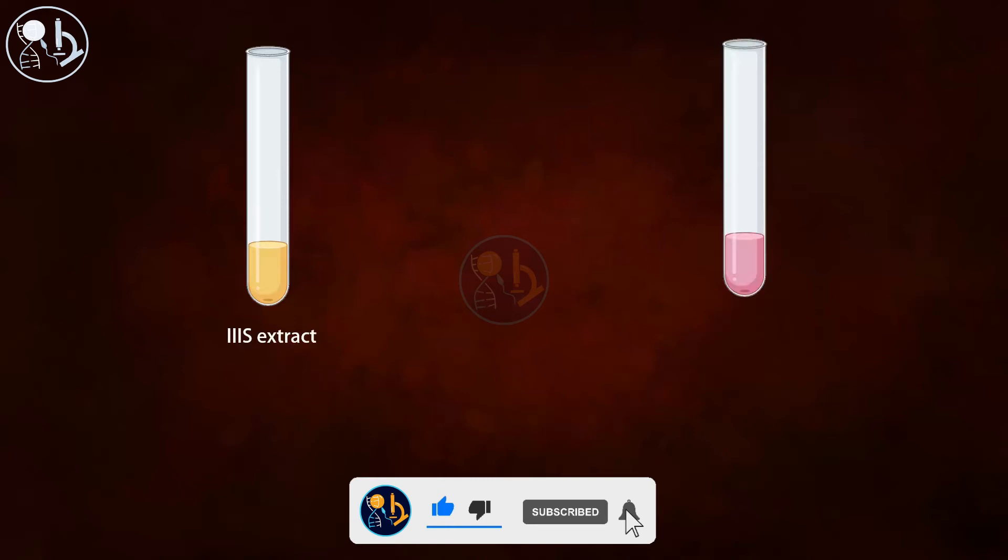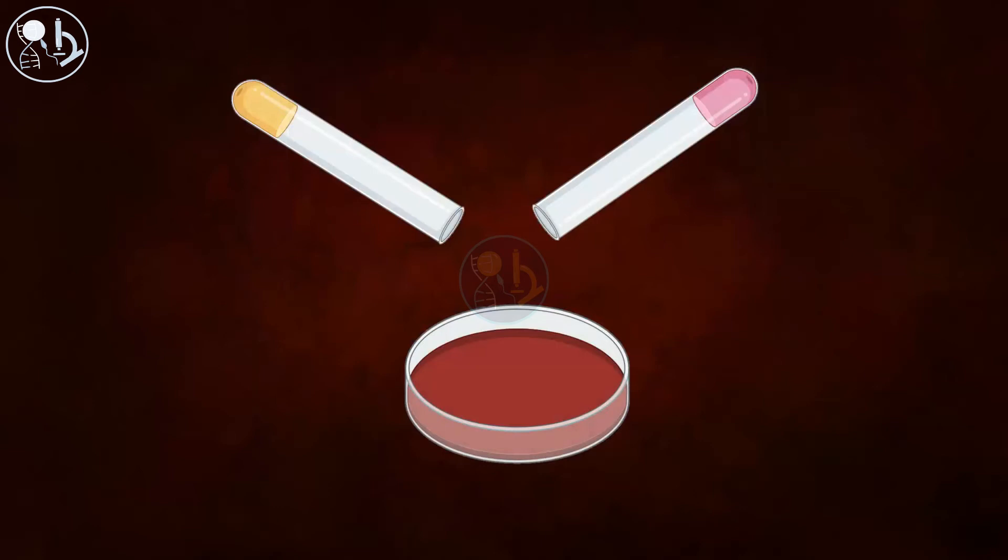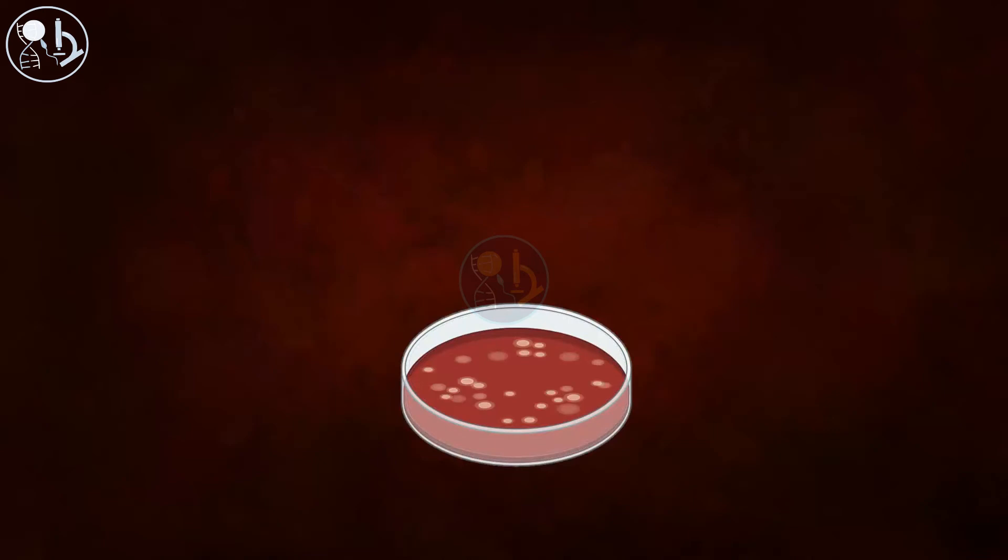After the centrifugation, they got two parts: extract and cellular debris. They took the extract out and mixed it with live 2R bacteria and put it in a culture plate. After the incubation, colonies of 3S bacteria appeared on the plate, indicating successful transformation.